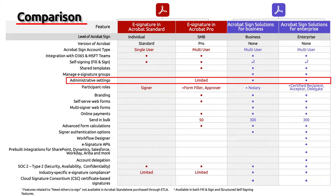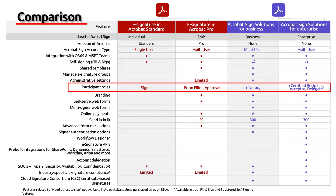Let's look at the administrative settings. In Adobe Acrobat Standard there are none, and in Adobe Acrobat Professional there are limited settings available, and these are only accessible through the browser. In Adobe Acrobat Sign, there are administrative rights on both the business and enterprise levels, and this can be done on a user or on a group level.